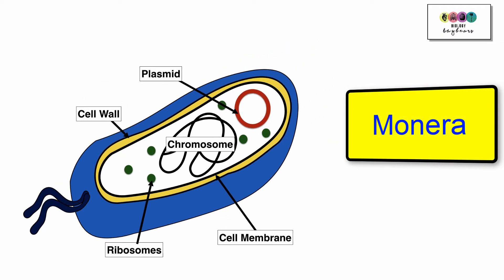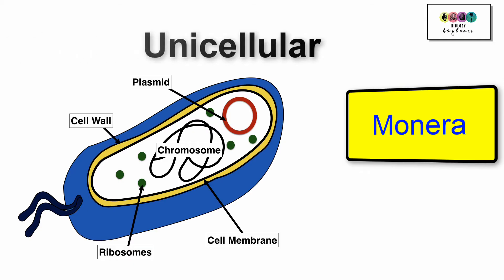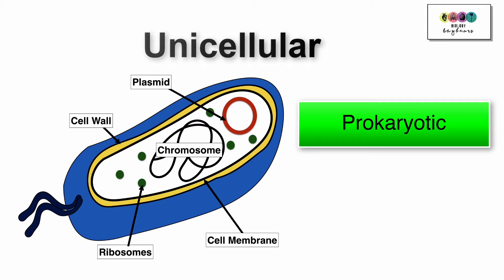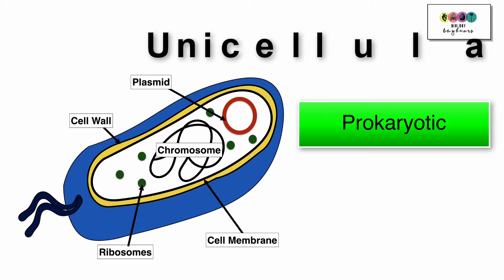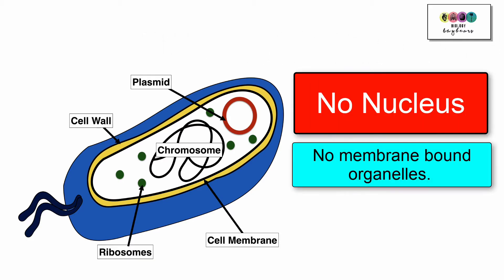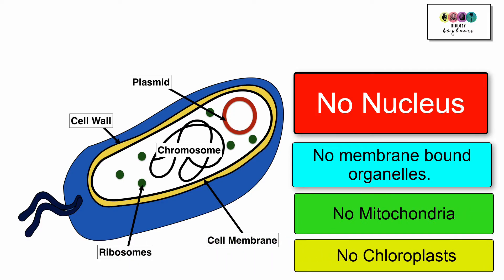So bacteria belong to the kingdom Monera. Bacteria are unicellular organisms, so they're made up of only one cell and they are prokaryotic. That means that they do not have a membrane-bound nucleus and they don't have membrane-bound organelles such as mitochondria and chloroplasts.